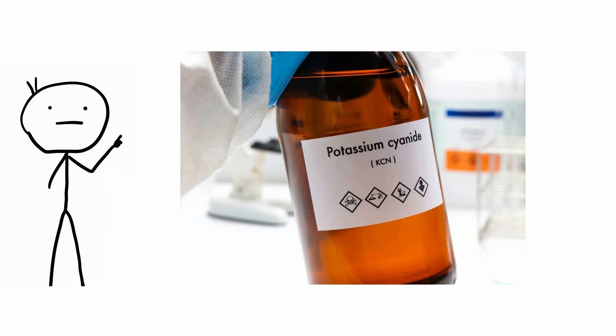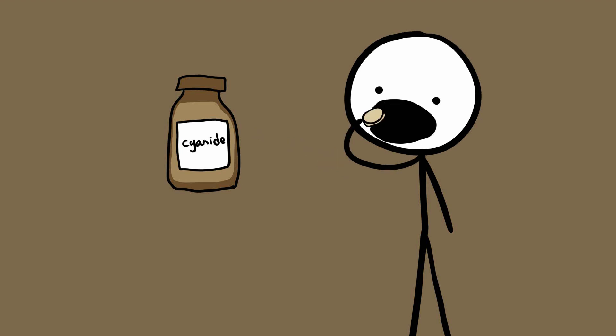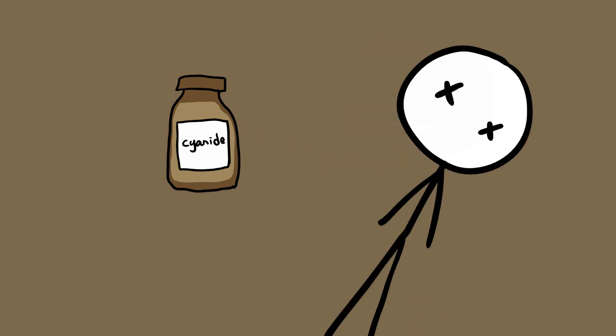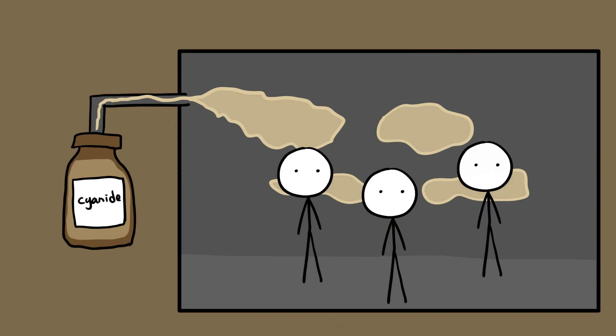Cyanide. Cyanide is one of the best known of all poisons, perhaps best known as the suicide pills reputedly carried by secret agents. It was also the active ingredient in the gas Zyklon B, used by the Nazis in extermination camps such as Auschwitz.